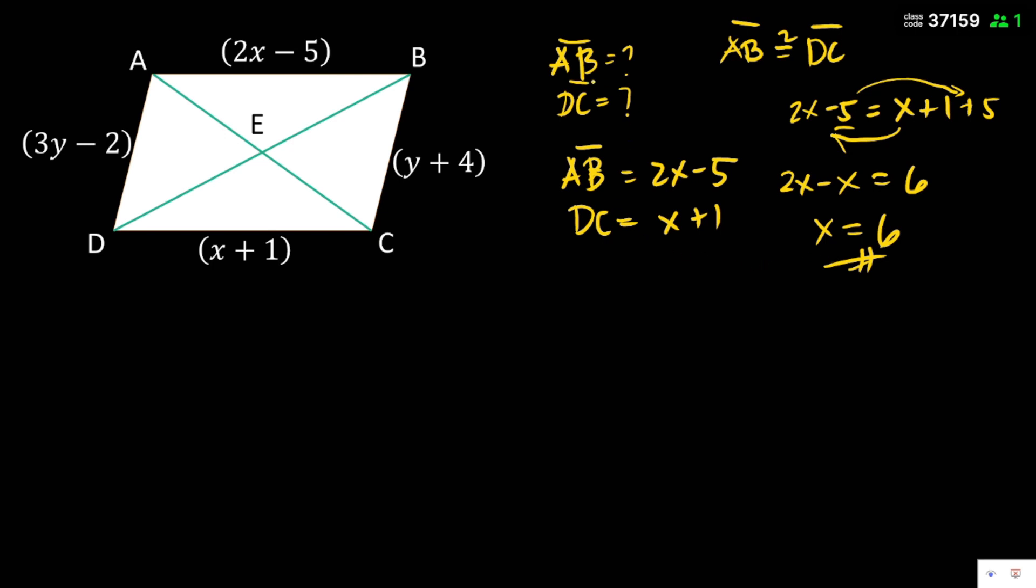Then, to find the value of AB and DC, we need to substitute to the given equation or given expression the value of x. So, AB is equal to 2x minus 5. Then, 2, substitute the value of x which is 6 minus 5. 2 times 6 is 12 minus 5. Then, we have AB is equal now to 7. And, DC, ito yung ating sagot. DC, x plus 1. Then, substitute the value of x, 6 plus 1 is equal now to 7.